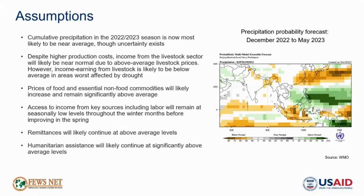Turning to our key assumptions for the projection period: first, revised forecasts now indicate that despite a third consecutive La Niña year, cumulative precipitation in the 2022-23 season is most likely to be near average. This is because the ongoing La Niña is not forecast to increase precipitation in the tropical Indo-West Pacific as has been the case in prior seasons. This represents a revision to the assumption used in the October analysis available on our website, and revisions to the likely impacts on wheat production and food security outcomes are underway — certainly much needed positive news after two consecutive drought years.